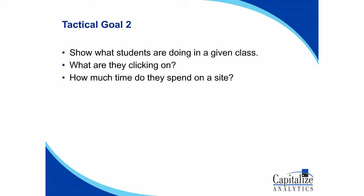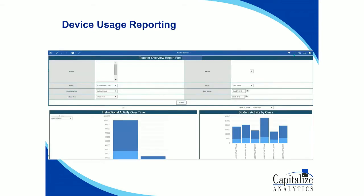The second goal was: students have these machines — what are they clicking on? How much time do they spend on a given site, and are they doing educational work or going to sites they maybe shouldn't? We came up with a report based on the students logged into the machine — we know who the student is, we know what the machine is — and then we track through click mechanisms to see which websites those students were going to. In this classroom example, they were primarily using the machines for instructional use, which is what we're looking for.